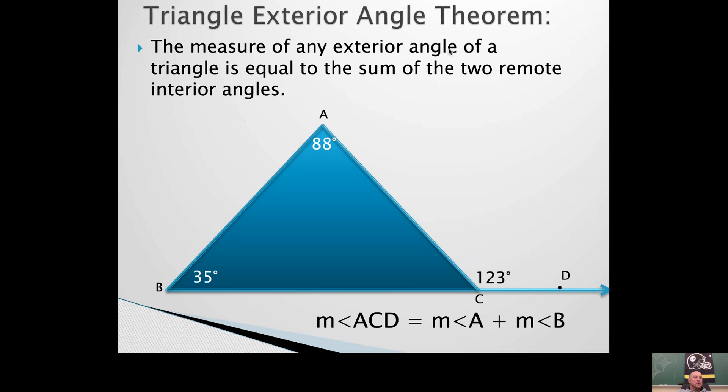The measure of any exterior angle of a triangle is equal to the sum of the two remote interior angles. So this exterior angle, 123, is the same thing as 88 plus 35.